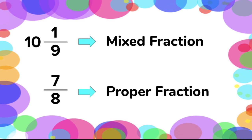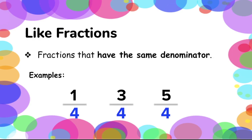Another type of fraction is called like fractions. These are the fractions that have a similar denominator, regardless if it is a proper or improper fraction. As long as it shows the same denominator, it is a like fraction. For example: 1 fourth, 3 fourths, and 5 over 4.